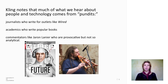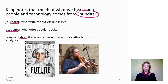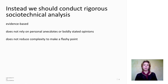Kling noted that much of what we know about technology comes from what he called pundits — people like journalists who write for Wired, academics who write popular books, or commentators like Jaron Lanier, who are pretty heavy on the provocation but lighter on the analysis. Kling felt we needed to go beyond that to a rigorous socio-technical study. This study should be evidence-based, should not rely on personal anecdotes or boldly stated opinions, and should not reduce the complexity of what we're looking at just to make a flashy point. That's a lot of what happens in the mainstream media, on blogs, or when you need to boil something down into a tweet. He was saying we have to do a much more expansive kind of analysis, because we have people and we have technology, and this is quite a complex system.